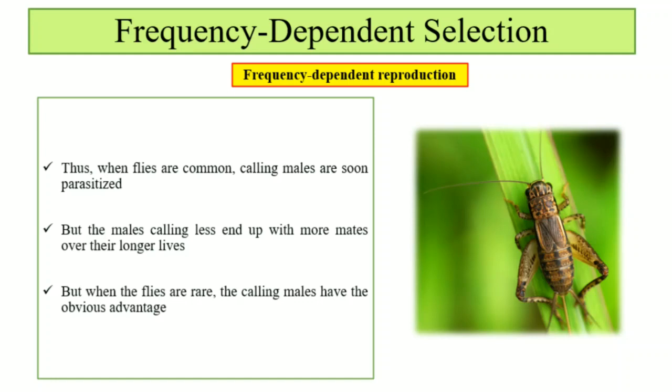When parasitoid flies are abundant in the habitat, calling males are soon parasitized and killed, and males that call less are favored. But when parasitoid flies are less common, calling males have an obvious advantage. In this way, frequency-dependent reproduction — the frequency of a phenotype or particular behavior within a population — affects the population and determines which phenotype will be favored and passed on to successive generations, maintaining genetic variation.